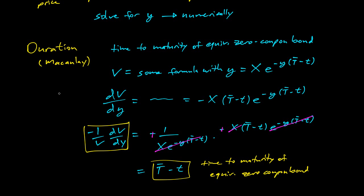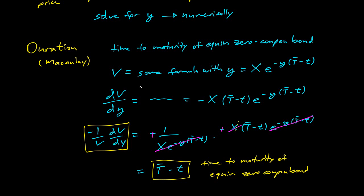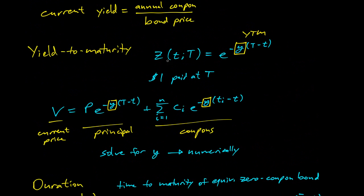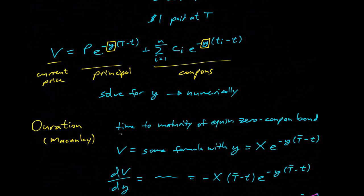And this will be measured in time. So one year or three months or something. And for a zero coupon bond, there is no calculation. It's just the actual time to maturity. So these are two different measures. We have the yield to maturity and the duration, which are ways to compare bonds. Cool.